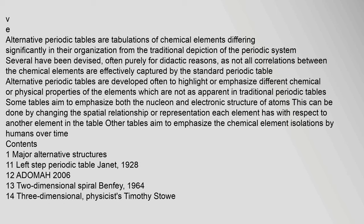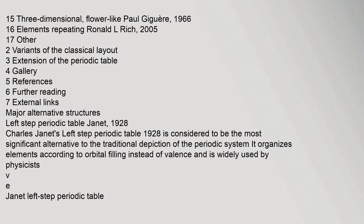Contents: major alternative structures include the Left Step Periodic Table by Janet (1928), ADOMA (1932), two-dimensional spiral by Benfey (1964), three-dimensional physicist table by Timothy Stowe, three-dimensional flower-like table by Paul Jaeger (1966), elements repeating by Ronald L. Rich (2005), and other variants of the classical layout, plus extensions of the periodic table.